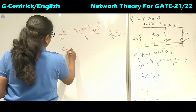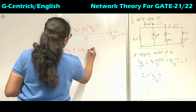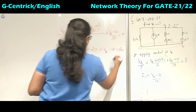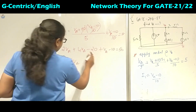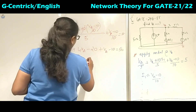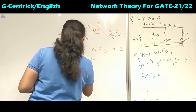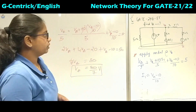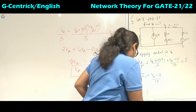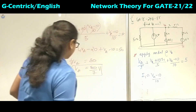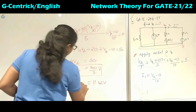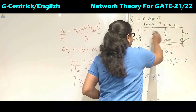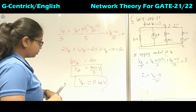We get 2VA plus 4VA minus 20 plus VA minus 10 equal to 50. So this is 6VA, then 7VA, and we have minus 20 minus 30; when it goes to the other side we get 80. So VA is equal to 80 upon 7 volts. This is the node voltage at VA: 80 by 7. Checking the answer — yes, it is 80 by 7, which is 11.42 volts. This is how, when we have the same potential, this whole section is equal to one node. Next we go to the fifth problem.